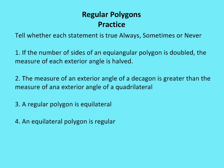We're going to say whether each statement is true always, sometimes, or never. Number one: if the number of sides of an equiangular polygon is doubled, the measure of each exterior angle is halved. The answer is always. If E equals 360 divided by N, and we multiply N by 2, that gives one-half E equals 360 over 2N, so yes, the exterior angle is halved.